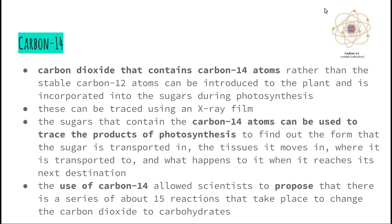The use of carbon-14 has allowed scientists to propose that there are a series of about 15 reactions that take place to change carbon dioxide to carbohydrates such as glucose. We've already looked at the light-dependent and light-independent reactions, but these are overarching categories that cover these 15 different reactions. By using carbon-14 atoms, scientists have found out so much more about photosynthesis than simply that carbon dioxide and water is turned into glucose and oxygen.